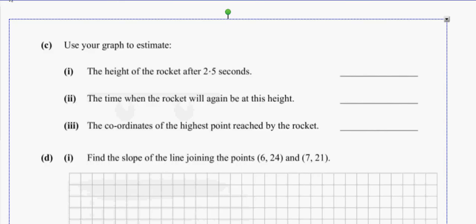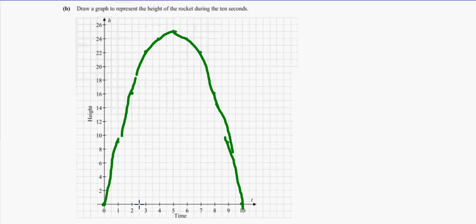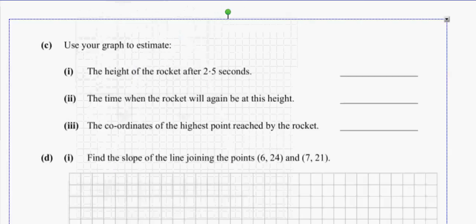Use a graph to estimate the height of the rocket after 2.5 seconds. What do we do here? I have to rocket after 2.5 seconds. What do I do? Lads. I got 20 roughly. What did you guys get? I'm sorry. I saw it went diagonal there, didn't I? You got 19. Did you? Somewhere between 19 and 20. I'm going to go for 19.5 for me.